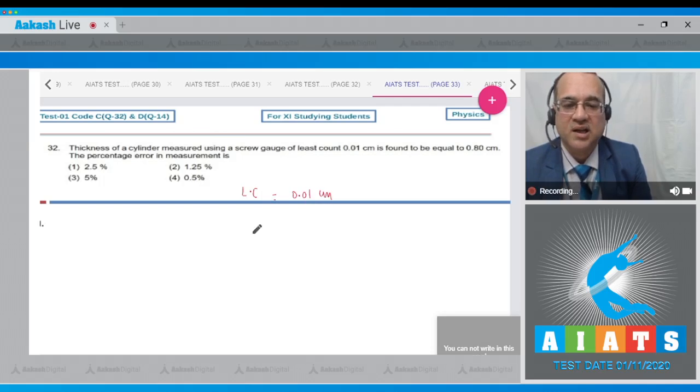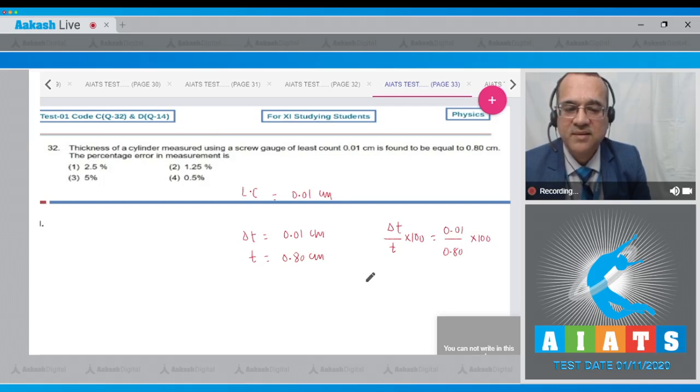That becomes the uncertainty. So this would be your error, 0.01 centimeter, whereas your measurement of thickness is 0.80 centimeter, and the percentage error is the error over the absolute value multiplied by 100. So this becomes 0.01 divided by 0.80 whole multiplied by 100. So this is equal to 1 divided by 0.8, and 1 divided by 0.8 is equal to 10 by 8 is 1.25 percent. So error in the measurement of the thickness of the cylinder is 1.25 percent. So option number 2 is correct. Answer is 2.